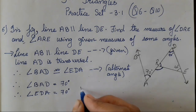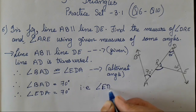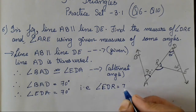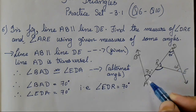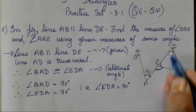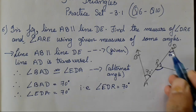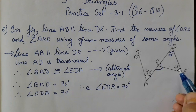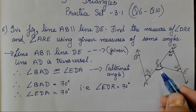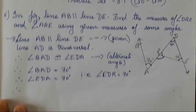Therefore, angle EDR is equal to 70°. Now we have two angles; by adding them and subtracting from 180°, we can find the third angle.